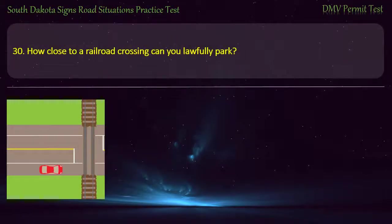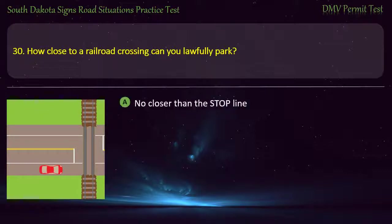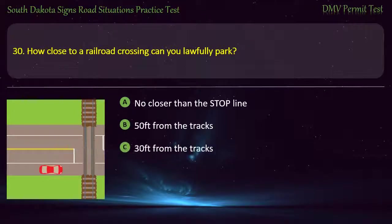Question 30: How close to a railroad crossing can you lawfully park? Options: No closer than the stop line; 50 feet from the tracks; 30 feet from the tracks; 15 feet from the tracks. Answer: 50 feet from the tracks.